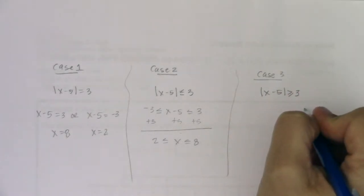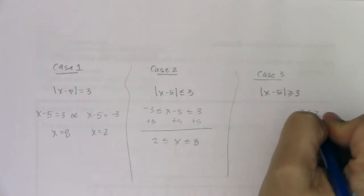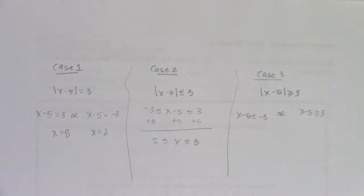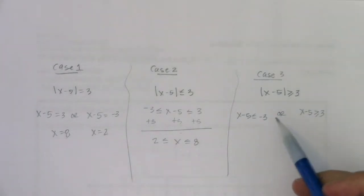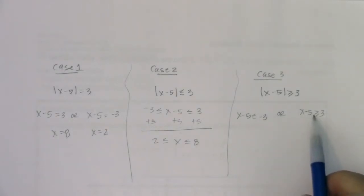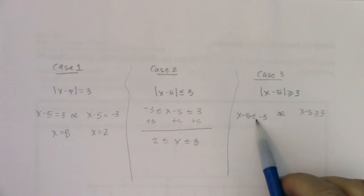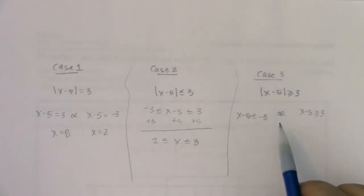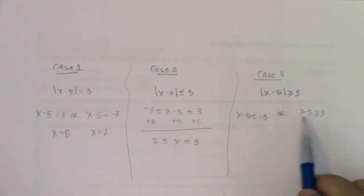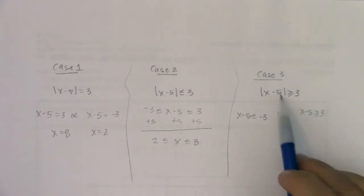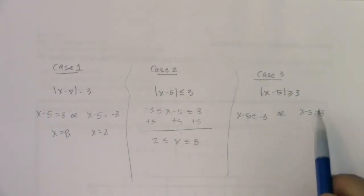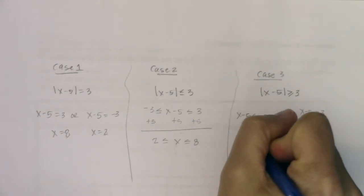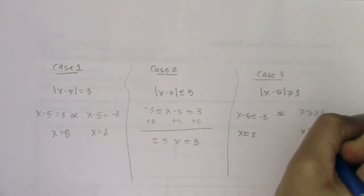Case three was the most convoluted. We would say x minus five is greater than or equal to three, or x minus five is less than or equal to negative three. I wrote them in this order because typically this produces the larger number. And if the expression has a negative sign in front of x, you'd want to flip-flop the order. Here I don't have a negative, so x would be greater than or equal to eight, or x would be less than or equal to two.